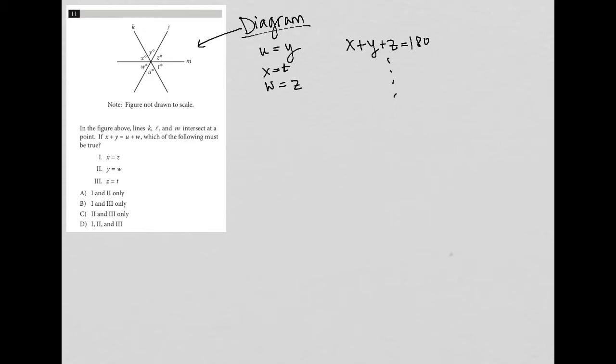So now going on to the question, it says in the figure above lines K, L, and M intersect at a point, which we see in the diagram, if X plus Y equals U plus W. Okay, so that we didn't know before. So I'm going to write that down. X plus Y equals U plus W, which of the following must be true? Well, so I've already taken the time to deal with what's true here. None of those are on this list, however. So now what does this mean? X plus Y equals U plus W.